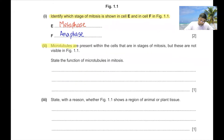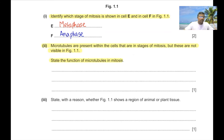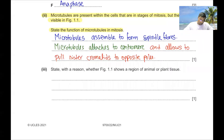Part 2. Microtubules are present within the cells that are in stages of mitosis, but these are not visible in figure 1.1. State the function of microtubules in mitosis. Microtubules assemble to form spindle fibers. They attach to the centromere and allow the pulling of sister chromatids to opposite poles.